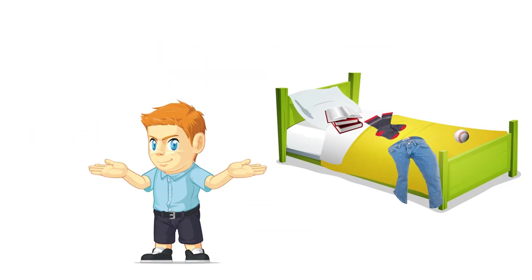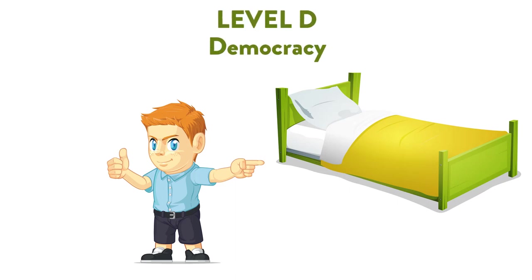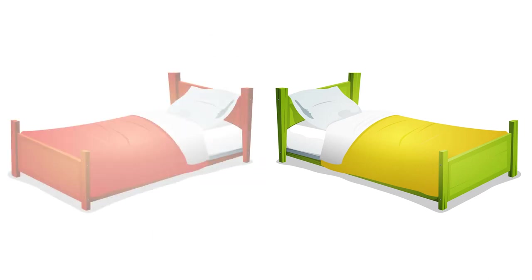In a similar scenario, where a teenager's room is also quite unorganized, making the bed before leaving for school is expected. So the youngster makes the bed without being told. We would refer to this as Level D, democracy — taking the initiative on the hierarchy of social development. Notice that the behavior is identical and that the bed has been made in both scenarios.